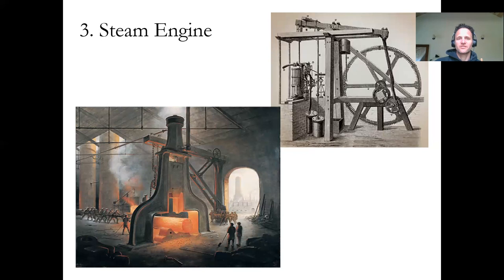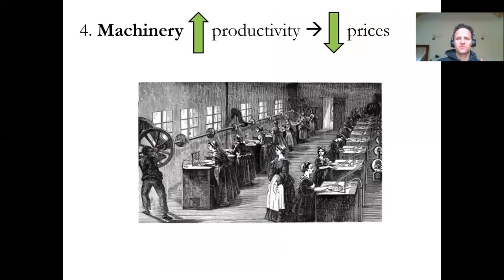The invention of the steam engine really transforms industrial Great Britain because they no longer have to have factories next to rivers. As a result of the steam engine and the creation of machinery, productivity goes way up — much more is produced and the prices of goods go down as supply goes up. So now you can get multiple shirts; it used to be that farmers might have one or two shirts they'd just wear and wear, but now you could afford multiple shirts.